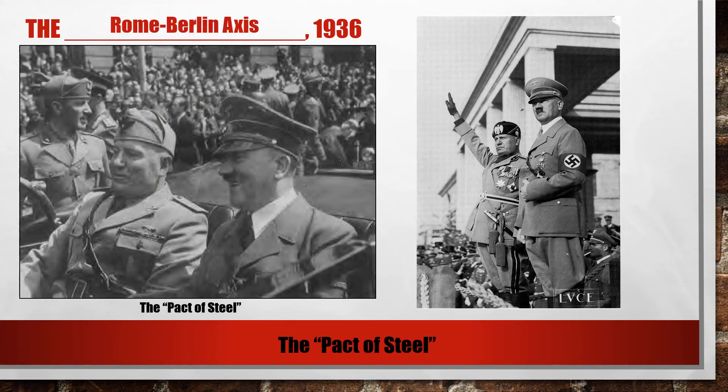Things are really falling apart in the 1930s. By 1936 we get the Rome-Berlin Axis — Mussolini and Hitler forming the Pact of Steel. Hitler actually had huge respect and appreciation for Mussolini, almost revering him because Mussolini had come to power 10 years before Hitler did. These guys forming this Pact of Steel is the start of the Axis Powers that will fight in World War II.